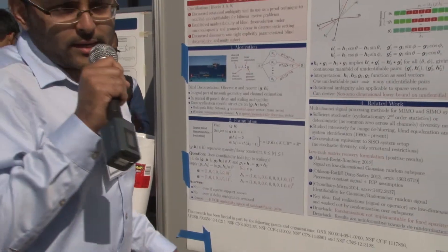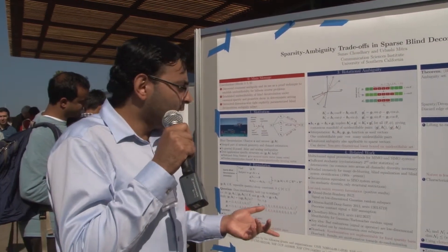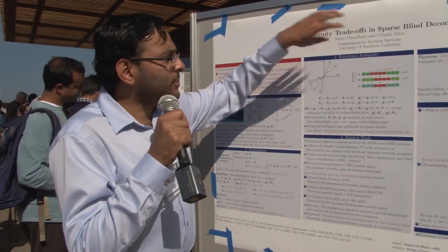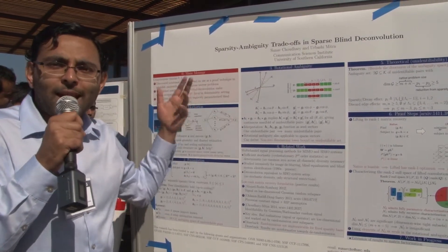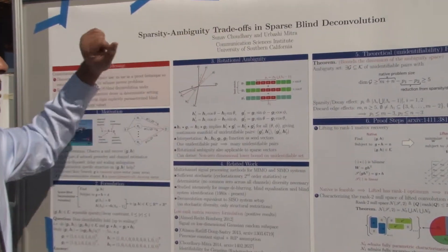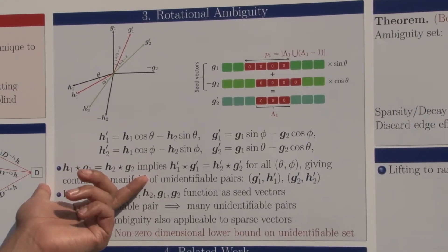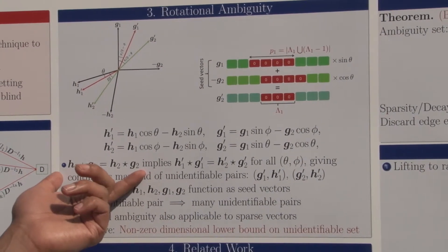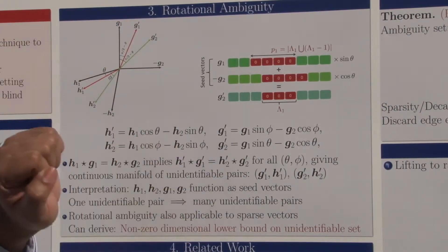The key technical novelty in this work is what I call rotational ambiguity. We identified how to analyze this problem and characterize this key element. What this means is that if you have two vector pairs which are unidentifiable because they give the same convolved result, you can generate a whole manifold of unidentifiable pairs by this rotational transform.